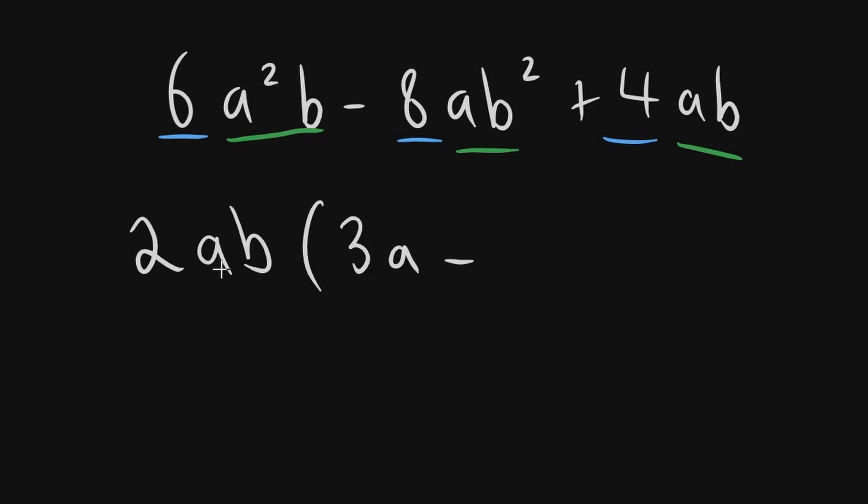Next, 2ab times by what gives you minus 8ab? That is why I also have this minus here. So 2ab times by 4. And I'm not writing a because a times a is just nothing. And but I have to write b because b times by b will give you b squared.